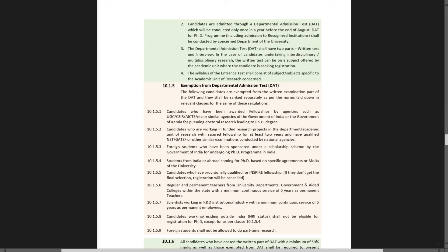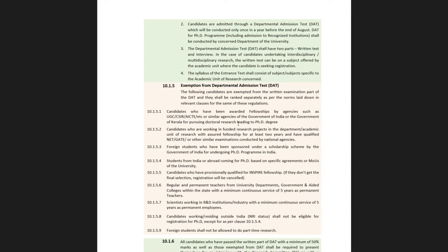The following candidates are exempted from the written examination and shall be ranked separately as per the norms laid down in relevant clauses. First, candidates who have been awarded fellowships by agencies such as UGC, CSIR, ICTE, or similar agencies of the Government of India or Government of Kerala for pursuing doctoral research leading to a PhD degree — including UGC, CSIR, ICTE NET, JRF fellowships. Second, candidates working in funded research projects in the department or academic unit of research with assured fellowship for at least two years and who have qualified NET, GATE, or other similar examinations conducted by national agencies.